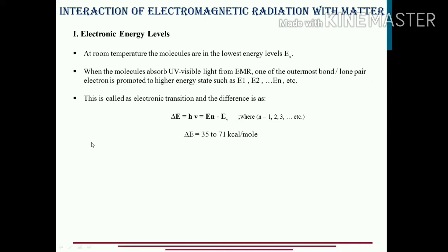Now what are those three transitions majorly? The first is the electronic energy level transition. Suppose a molecule is at room temperature. Whenever a substance is at room temperature, obviously the molecules, or the components of that substance, or the subatomic particles and all the species of that particular substance, they are in the lowest energy level. The lowest energy level, I mark it as E0. So at room temperature, the molecules of the substance that I want to study, they are in the lowest energy level E0. Now these molecules are subjected to electromagnetic radiation.